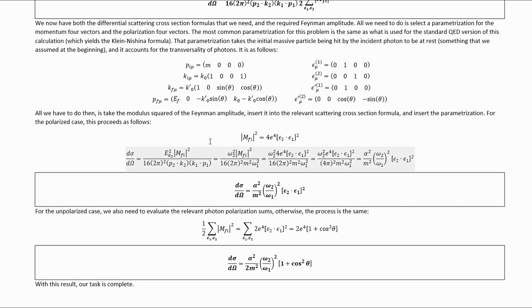For the polarized case, this proceeds like this. This is the modulus square of the Feynman amplitude. Inserting that and the parameterization and then simplifying trivially gets us to here. And this is our final result.